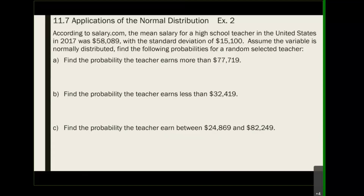They change it on you now — instead of finding the percentage, they ask you to find the probability. But finding the area, the percentage, and the probability is all the same, so don't get distracted by that word. For part A, they ask you to find the probability that a teacher earns more than $77,719. 'More than' means we're looking for the area to the right of $77,719.